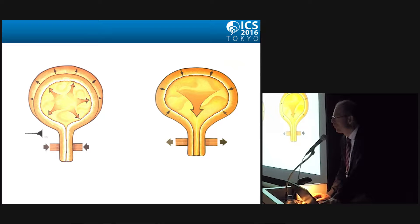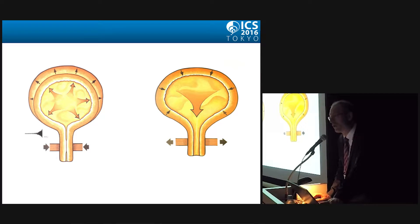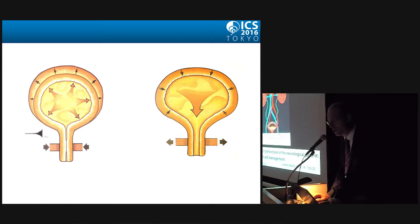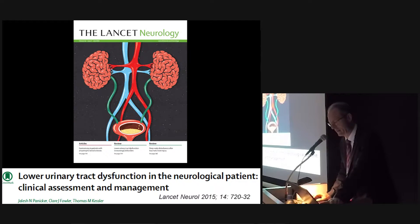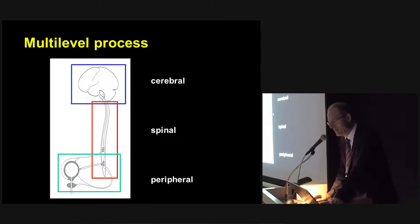The function of the lower urinary tract is very simple: to store and to void. However, the control of the lower urinary tract is complex, and this is nicely shown by the illustrator of Lancet Neurology, just symbolizing the kidney as a brain. It is a multilevel process involving the cerebral part, the spinal and peripheral part.